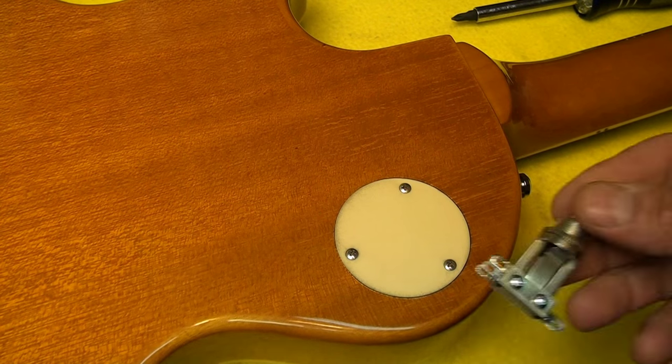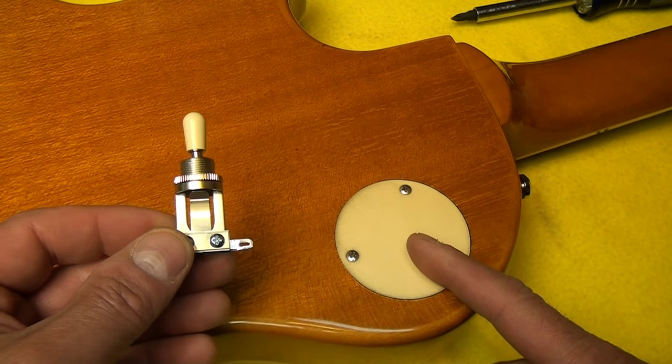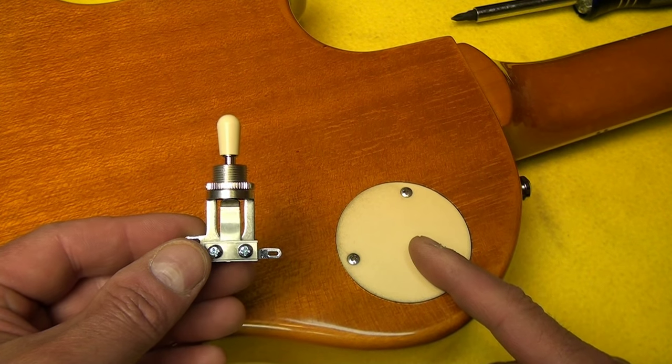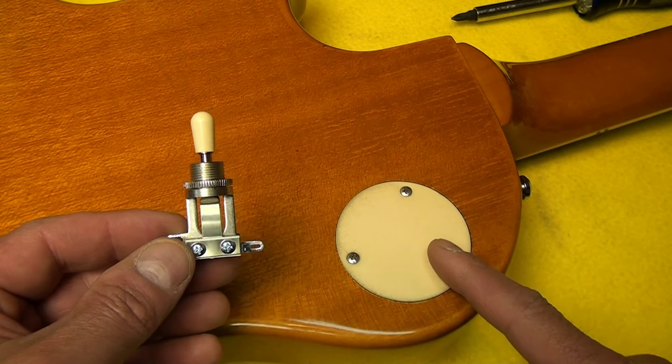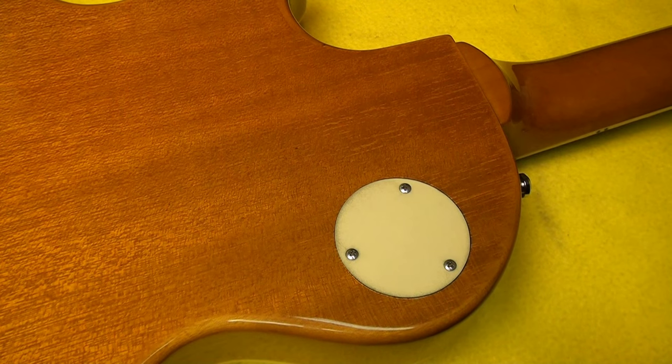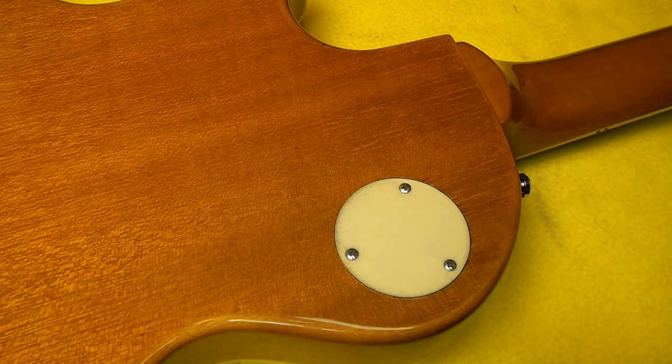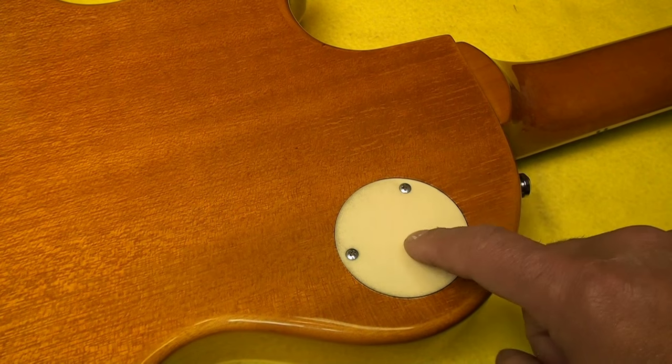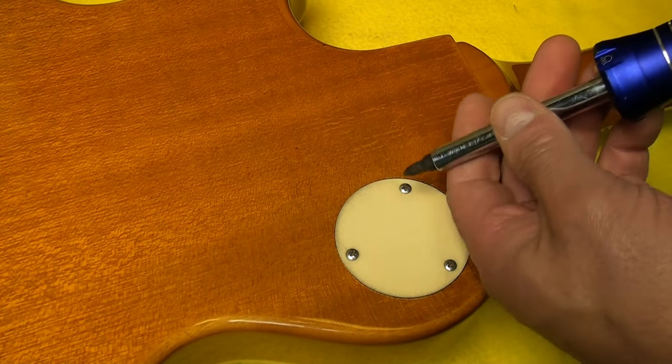All right, so what I'm going to do here today is replace the original switch in this Epiphone Les Paul with a Switchcraft switch. The original switch has been cutting out about every six months or so, and I fix it and it basically cuts out again, always at a bad time. So the first thing I'm going to do is start by removing this switch panel here on the back of the guitar.